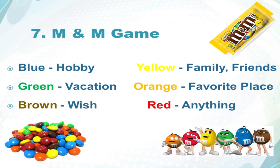What do they talk about? It depends on the color of the M&M. If it's blue, they talk about a hobby. If it's brown, they talk about a wish they have. Yellow is about their family or their friends. Orange is about a vacation they took in the past. And red is about anything they want to talk about.